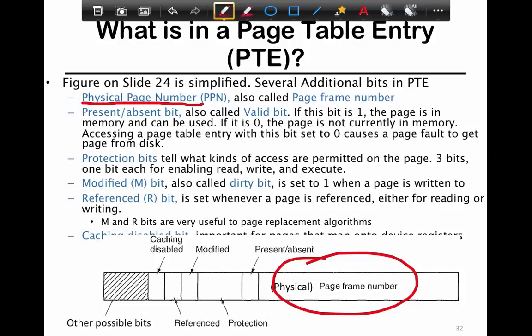It also has a present or absent bit, also called a valid bit. If the bit is one, the page is in memory and can be used. If it is zero, then the page is not currently in memory. This is how swapping is implemented.